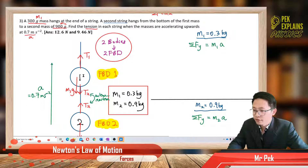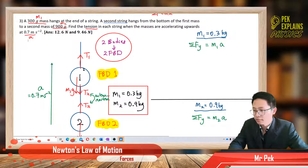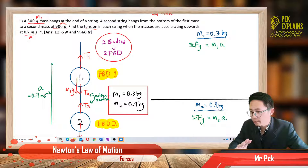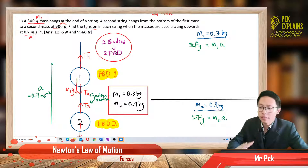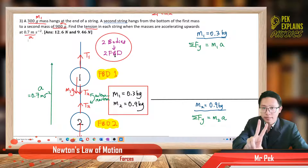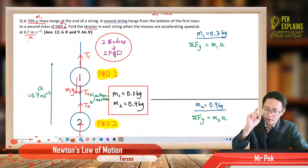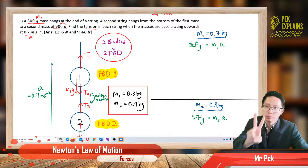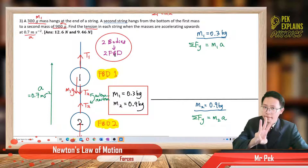The first mass is 300 grams, and the second mass is hung below the first mass. Since we have two masses — two bodies — we must draw two free body diagrams. Two bodies, two diagrams. If you have three bodies, you must draw three free body diagrams.